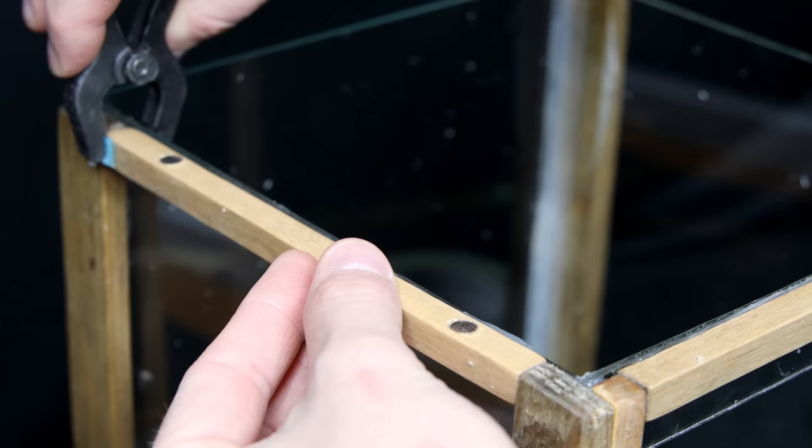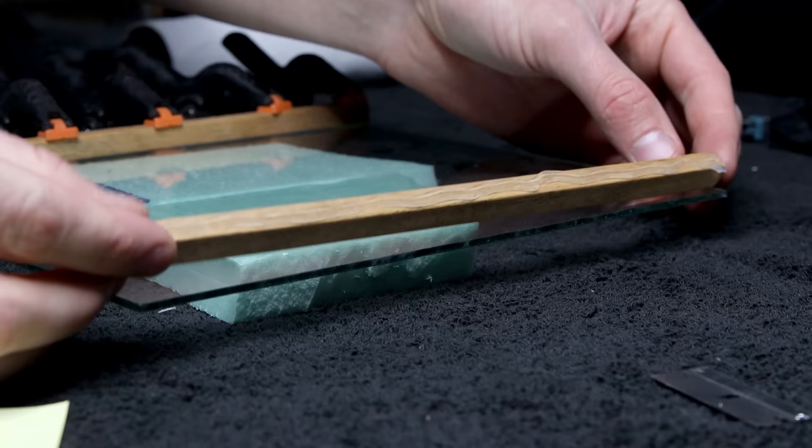You'll notice that the side pieces on the top have magnets embedded in them as well. More on that later. I also attached the boards to the glass door. In doing so, I made sure the magnets on the right were oriented in the correct direction. Once the silicone cured, I removed the clamps.